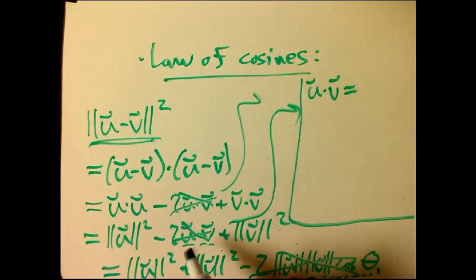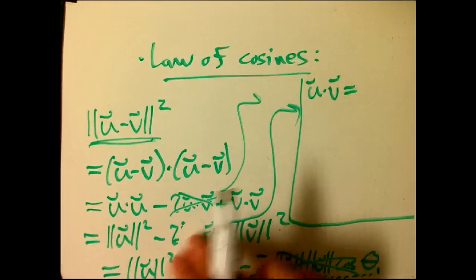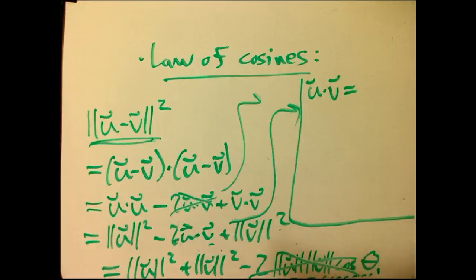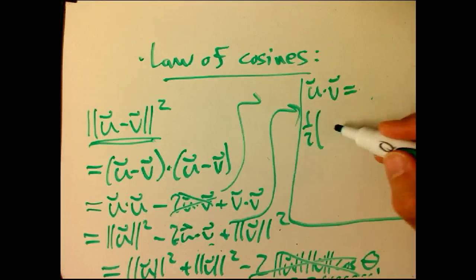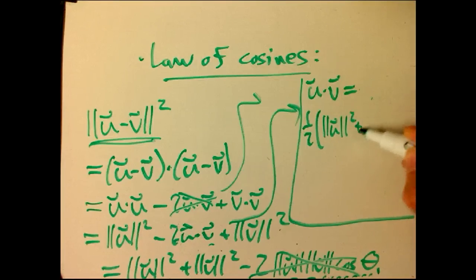U dot V. I know I crossed it out here, so let me just write it in. That's U dot V. I'm just going to put it on the other side and just divide by minus 2, and what I get is one half of magnitude of U minus V squared. Let's see. Oh, no. Let's see. Let me put it down here. One half. Give myself more room. Sorry.